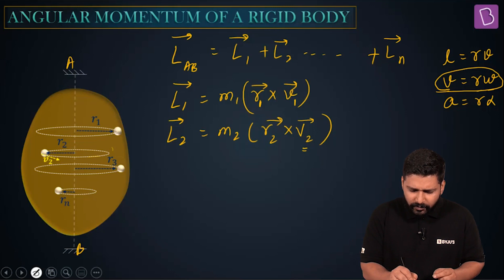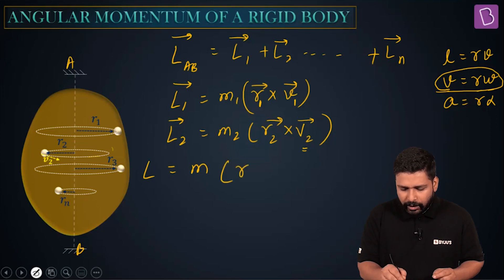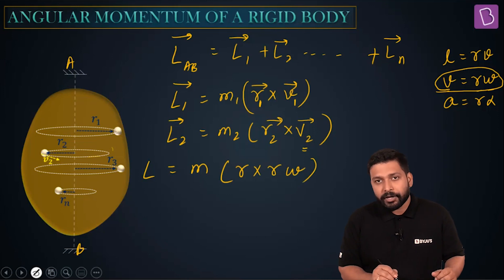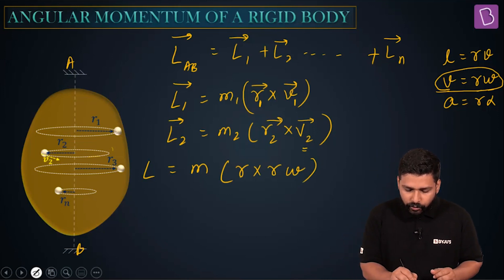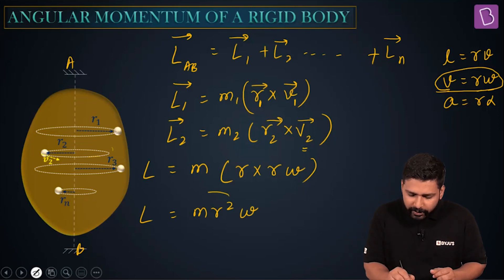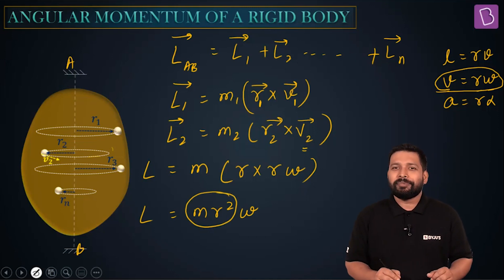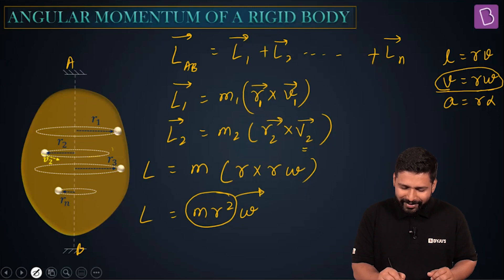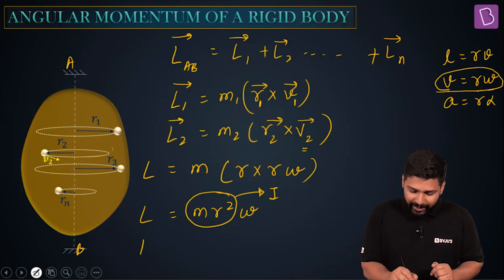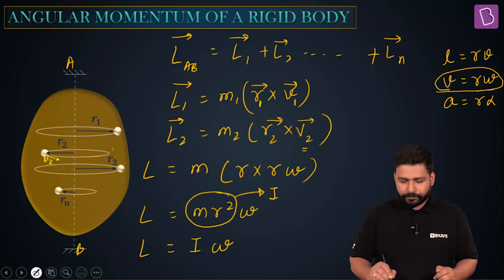Writing a general expression: L equals M times R times V, replacing V with R times omega, gives L equals M times R times R omega. Taking the magnitude, that is L equals MR² times omega. What is this MR²? For one particle about a particular axis, this is nothing but moment of inertia. So I can write L equals I times omega.